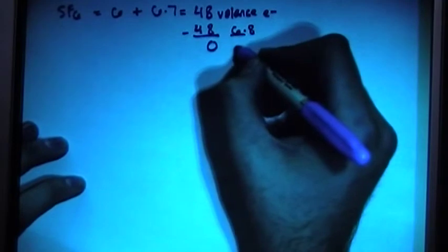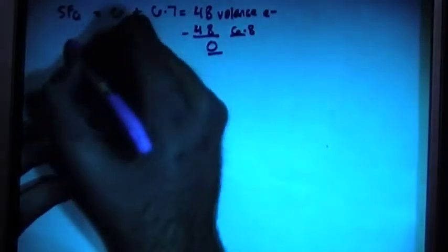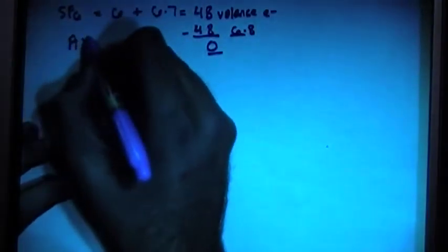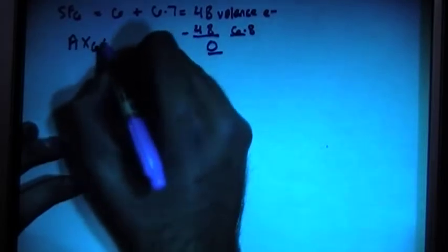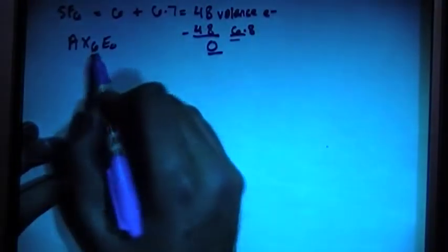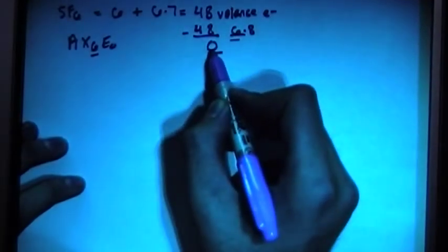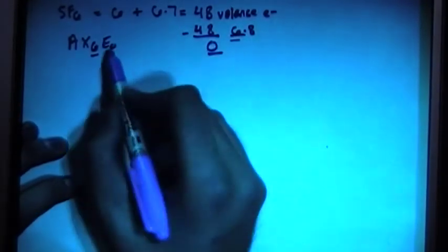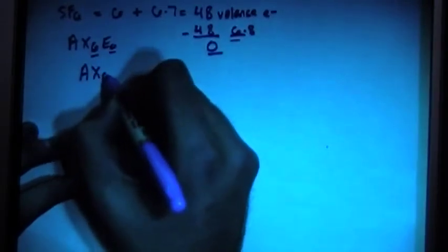And there's 0 remainders of 2 left. So that means that this is going to be AX6E0, where the 6 right here is this, and the 0 groups of 2 as a remainder is this. So the final shape is going to be the AX6 shape.